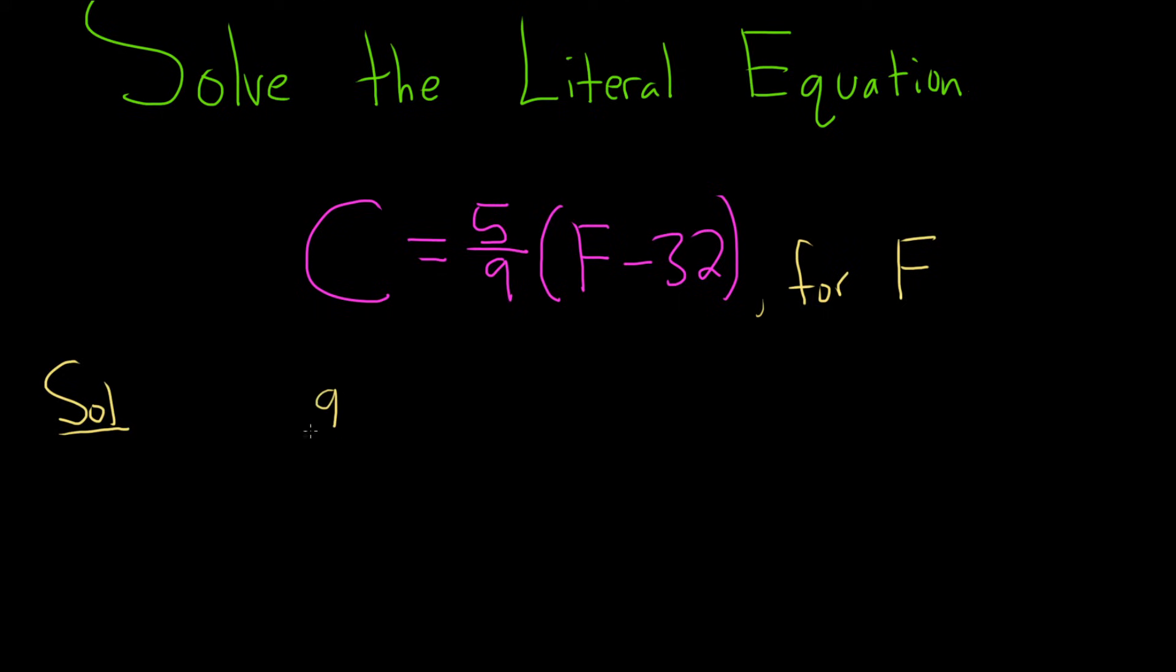So I'll put a 9 over 5 here next to the C, and then same thing here. So what you do to one side, you do to the other. So we have F minus 32. So you just put it on both sides and then this goes away. These cancel.